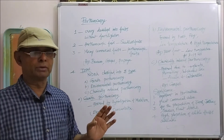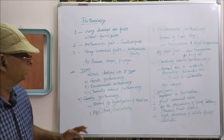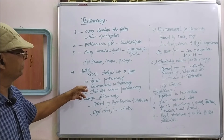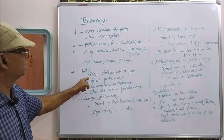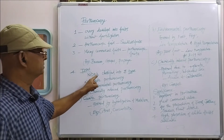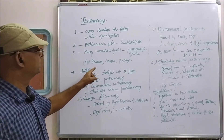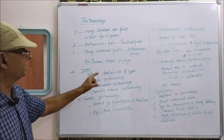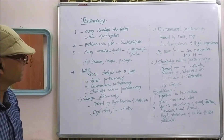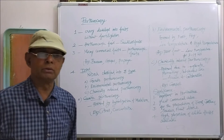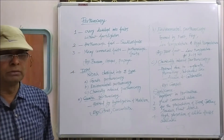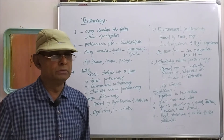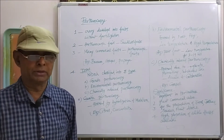Seedless fruits are Parthenocarpy fruits. There are three main types of Parthenocarpy, classified based on the scientist Niche. Niche classified Parthenocarpy into three types: one is genetic Parthenocarpy, second is environmental Parthenocarpy, and third is chemically induced Parthenocarpy. First, genetic Parthenocarpy.